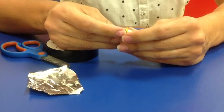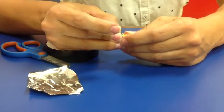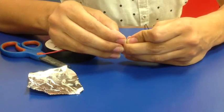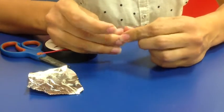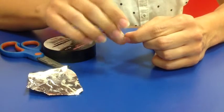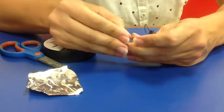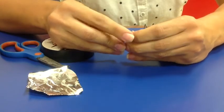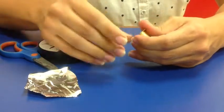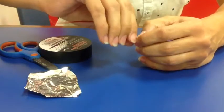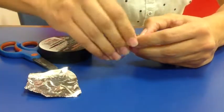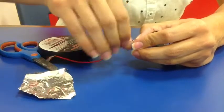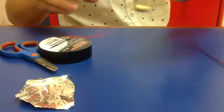Then you do the same to the other one. Fold it in half like that, and you start twisting it. It should be like this so far.